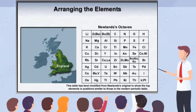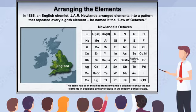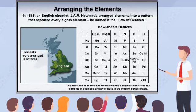Newlands had a musical background, which presumably led to his naming this pattern the Law of Octaves. He arranged the elements known at the time into a table with seven elements in each row. The pattern repeated every eighth element, so that the first element was like the eighth, the second like the ninth, and so on. However, his musical analogy was not well received by a scientific community reluctant to consider a connection between music and chemistry.